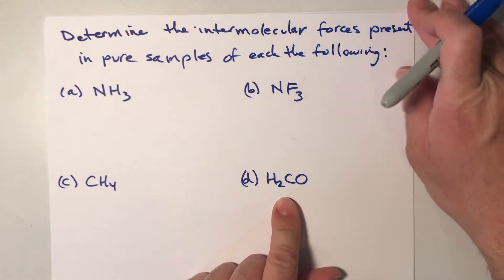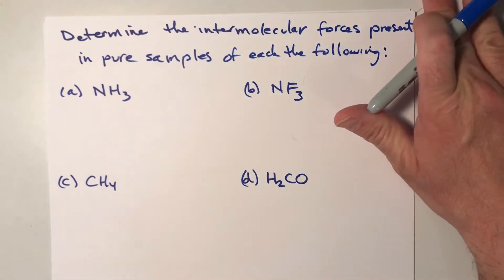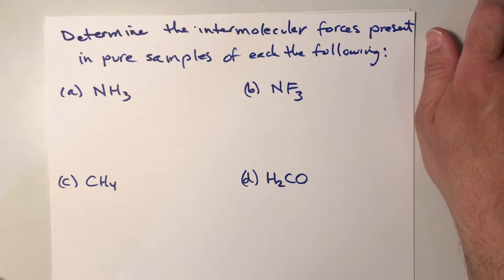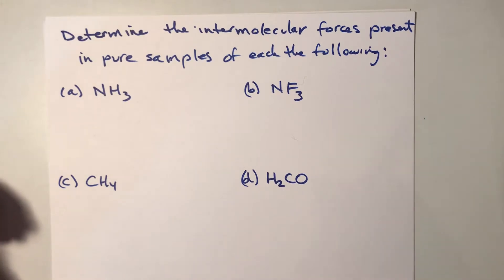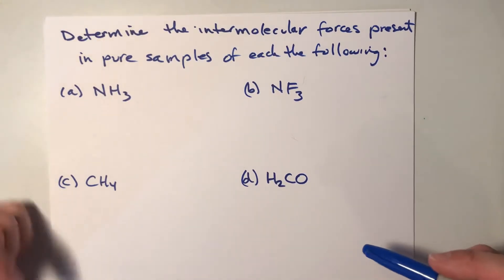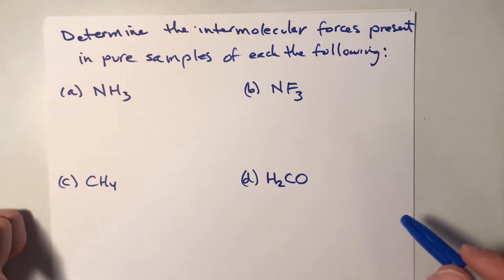I will remind you as a hint, the very first thing you have to do is draw a Lewis dot structure for each of the substances. So before you do anything else, you're going to need to draw Lewis dot structures. So go ahead and pause the video right now and then restart it to hear the answer.